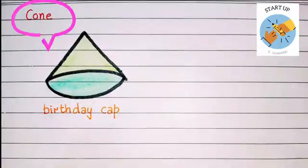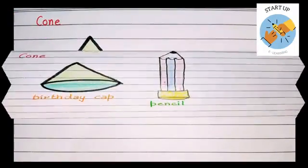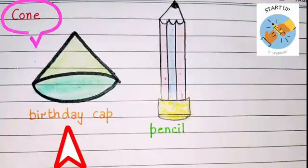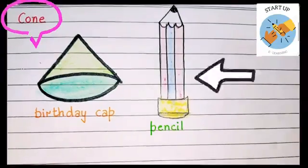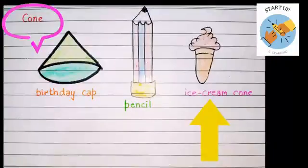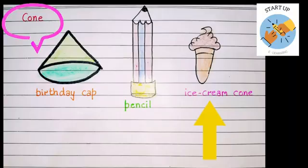Now let's talk about a cone shape. Some examples of cone shapes are birthday cap, a pencil or we can say an ice cream cone. In layman's language, we call it softy also.